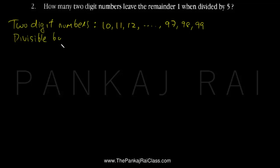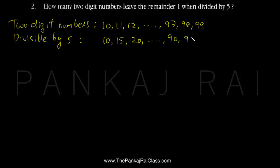Now out of these, the numbers which are divisible by 5 are 10, 15, 20, and so on till 90, 95. So these are the numbers which are divisible by 5.